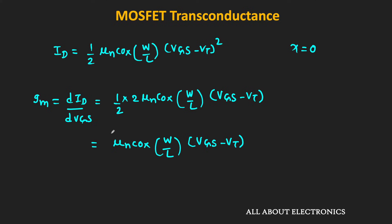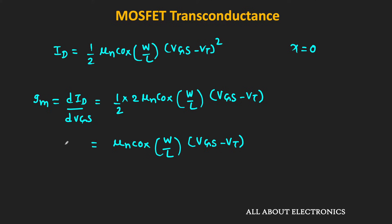So this transconductance relates the output current with the input voltage, and the unit of this transconductance is the Siemens. From this expression, for the given MOSFET parameters, the transconductance is proportional to (Vgs − Vt). Or if (Vgs − Vt) is kept fixed, then Gm is proportional to W/L.